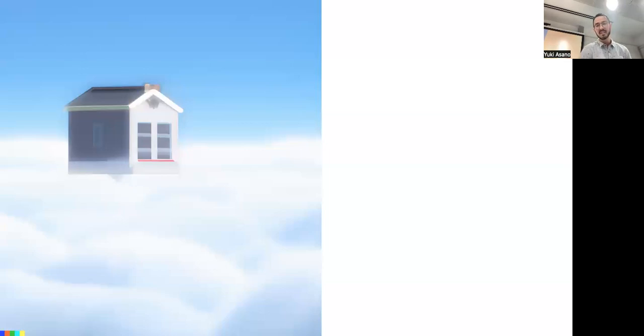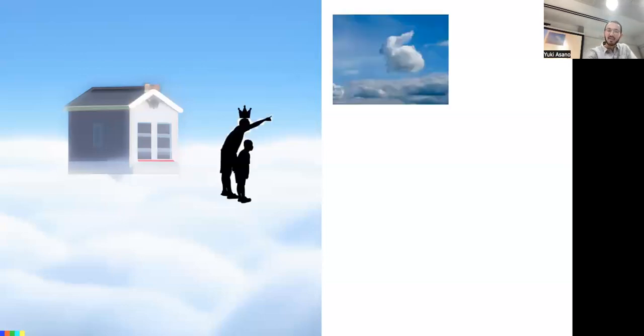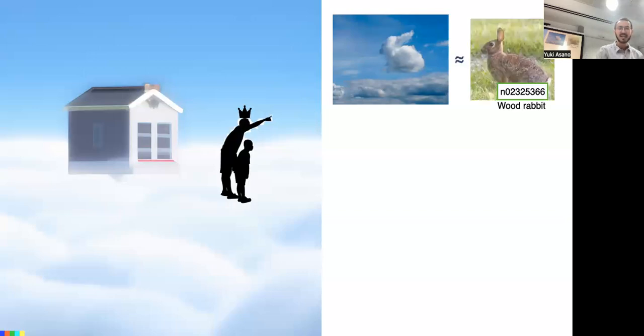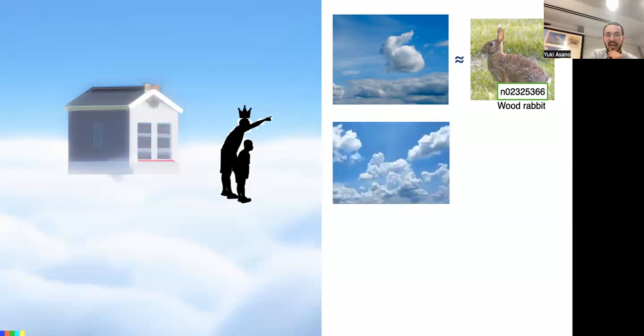So instead he started teaching his child the ImageNet 1000 classes, as one always would do, right? And so they looked around and when they found a cloud such as this one, the king would tell his son, oh this is ImageNet WordNet ID n02325366, or what the peasants call a wood rabbit. And he did this while remembering how he learned it with the original images, beautiful RGB images.